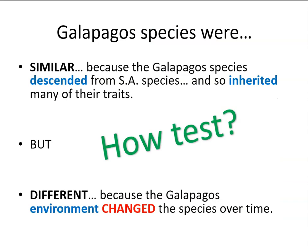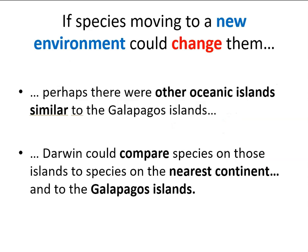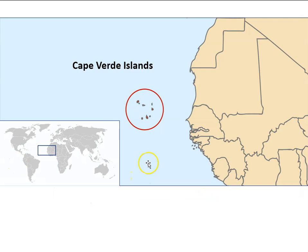Darwin boiled down his radical idea to migration and change: South American species migrated to the Galapagos Islands, but their time living on the islands changed those populations into new species. This helps explain why they are similar to South American species and yet different from them. How could Darwin test this proposal? It wasn't possible to do an experiment, but he could make further observations. He cleverly reasoned that if species moving to a new environment could change them, perhaps there were other oceanic islands similar to the Galapagos. That's where the Cape Verde Islands come into play — Darwin visited them early in his journey and recorded the kinds of species found there.